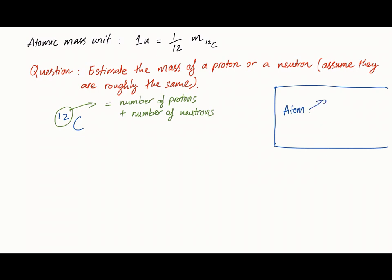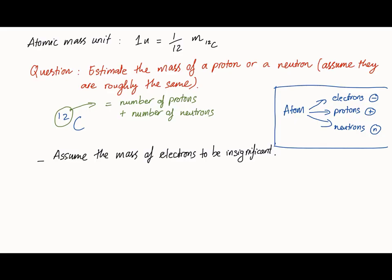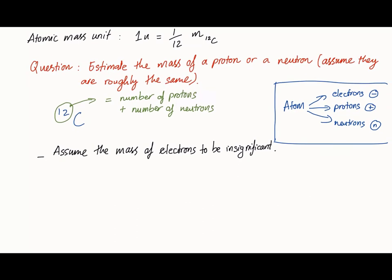Now, any atom is made up of three components: electrons, protons, and neutrons, except for some hydrogens. Electrons are practically weightless compared to protons and neutrons. It's about four orders of magnitude smaller than a proton and neutrons, so we tend to ignore it.